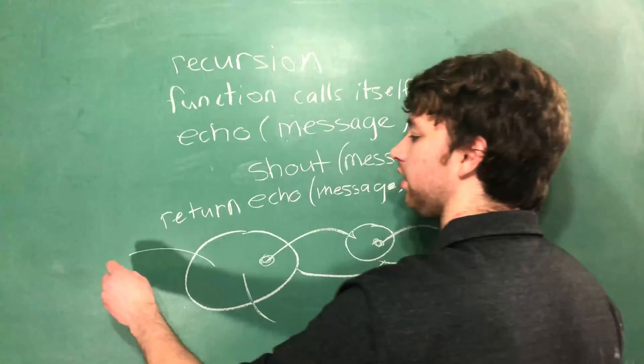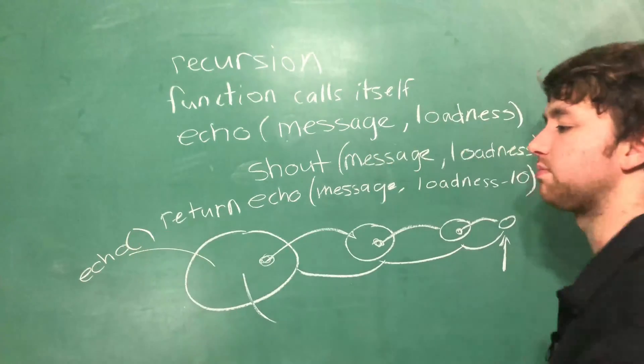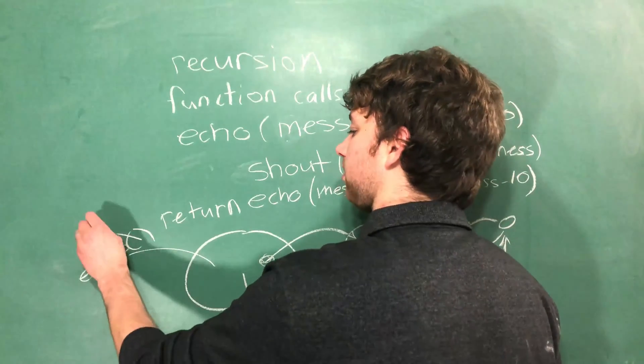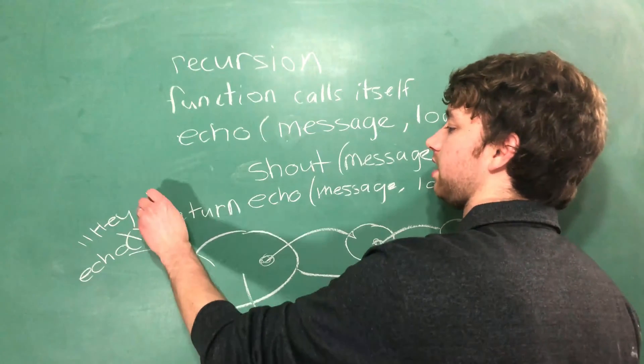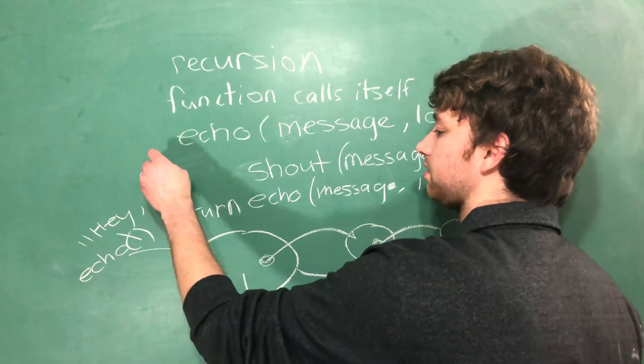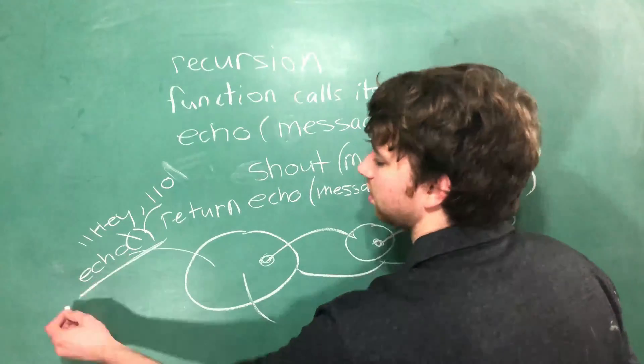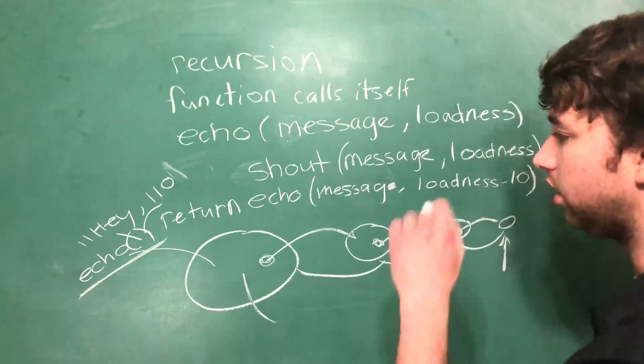So wherever the echo function was called and some data was passed in, let's say we sent it in at 110 decibels. We pass that data in right there. Well, this location, wherever this code was called, we need to make sure we return to that correct location.